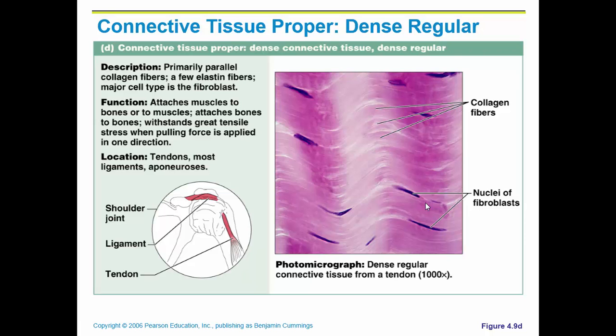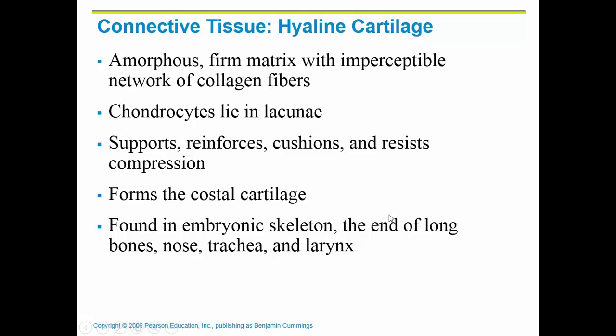This is what dense connective tissue looks like. You can see that it has collagen fibers, and then the nuclei of the actual cells are scattered throughout.